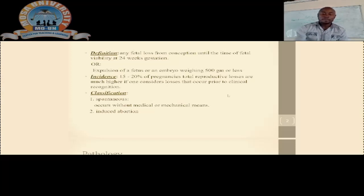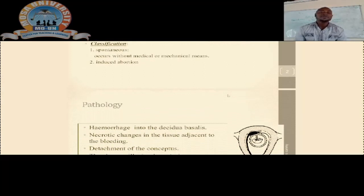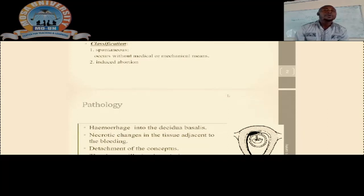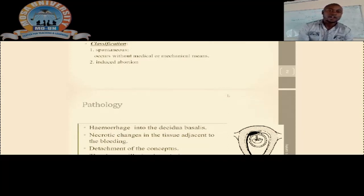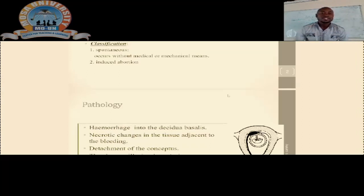Regarding classification, these abortions can be classified into two parts. The first classification is spontaneous abortion — the one that occurs without any medical or mechanical means, meaning no trained or medical personnel has any influence. We can also think about induced abortion, which is where all criminal abortions come in.